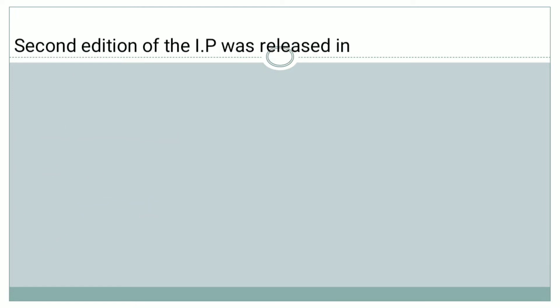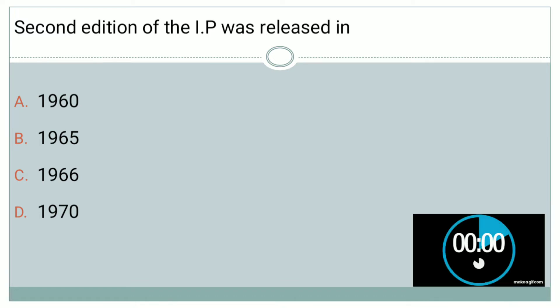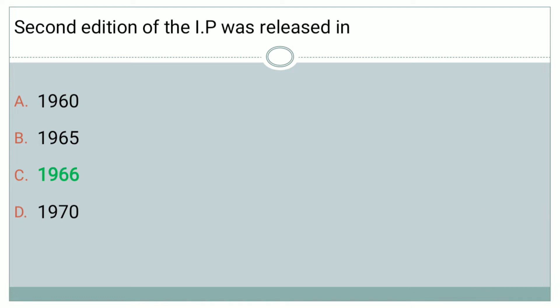The next question: The second edition of IP was released in — Option A: 1960, Option B: 1965, Option C: 1966, Option D: 1970. The right answer is Option C, that is 1966.